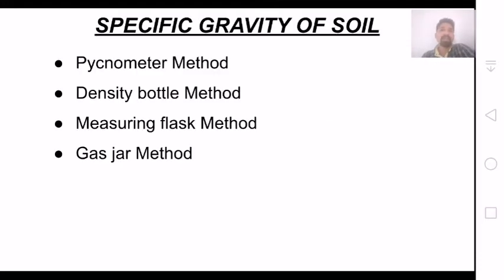Next, we will see the specific gravity. The specific gravity of soil is defined as: at a constant temperature, the ratio of unit weight of soil to the unit weight of water. We have 4 methods: pycnometer, density bottle, measuring flask, and gas jar method. The density bottle method is more time-consuming. The measuring flask method and gas jar method also take time.